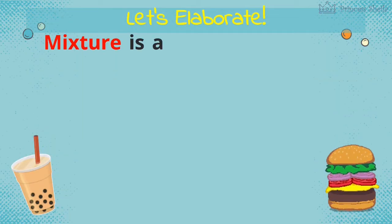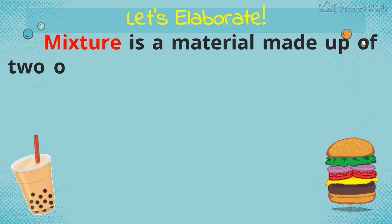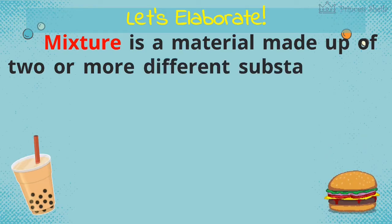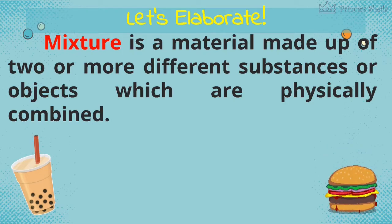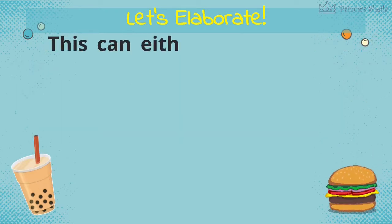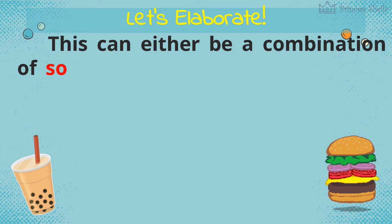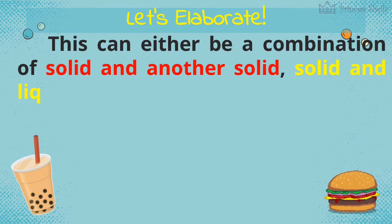Mixture is a material made up of two or more different substances, or objects, which are physically combined. This can either be a combination of solid and another solid, solid and liquid, or liquid and liquid.